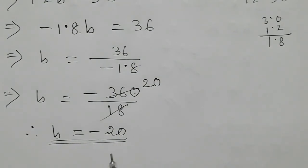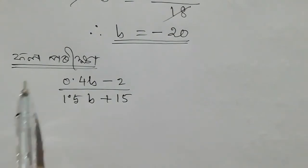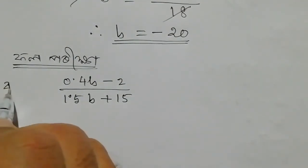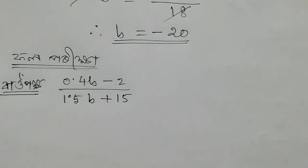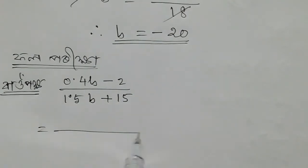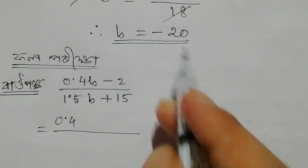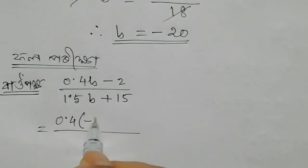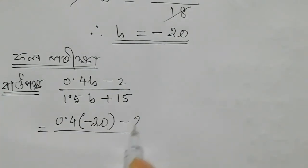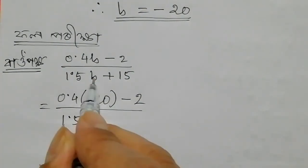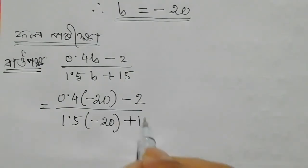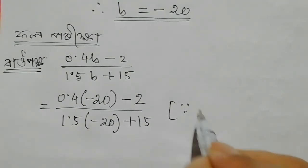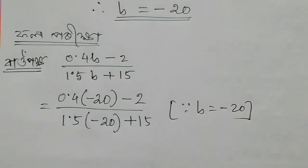Minus 22 is the answer. So I am going to write 2 by 3, which is 0.4, which is minus 20. So I am going to write minus 2 by 3. I am going to write 1.5 into b. Minus 20 is 12 and I am going to write plus 20 is 15. If I am going to write minus 20, it will be minus 25.